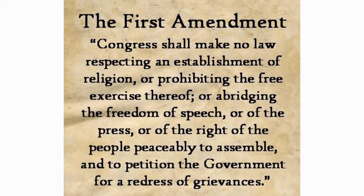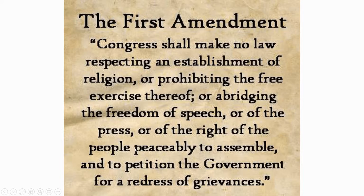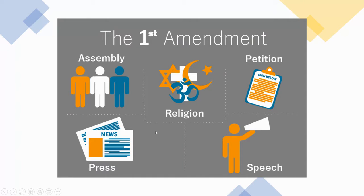So let's read the First Amendment. It says: Congress shall make no law respecting an establishment of religion, or prohibiting the free exercise thereof; or abridging the freedom of speech, or of the press; or of the right of the people peaceably to assemble, and to petition the government for a redress of grievances. So what does all that mean? That means we get five freedoms from the First Amendment.